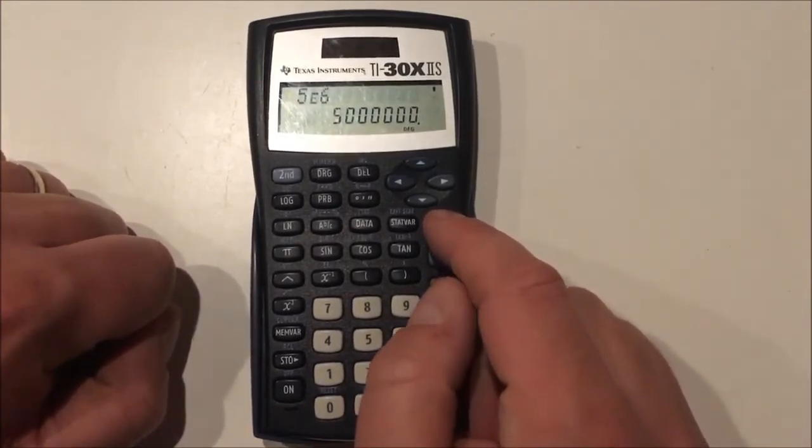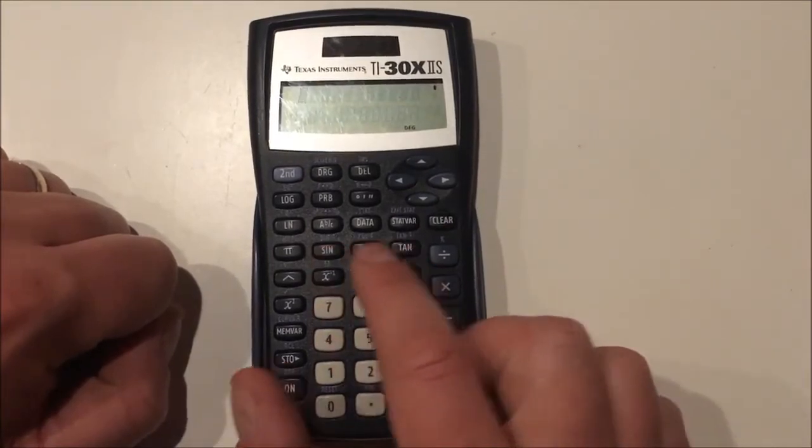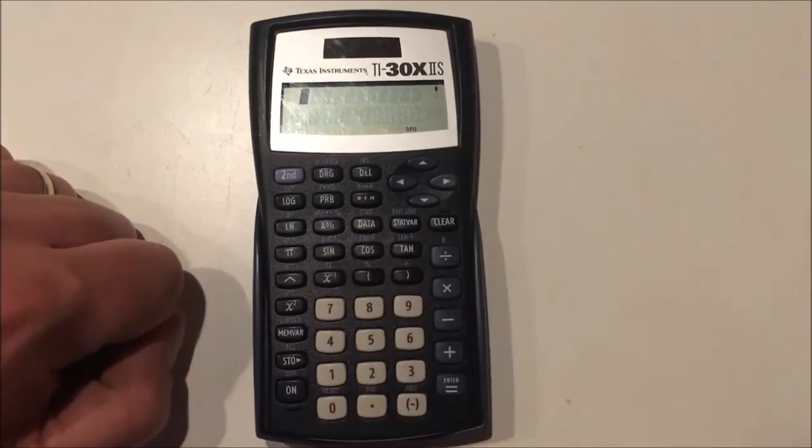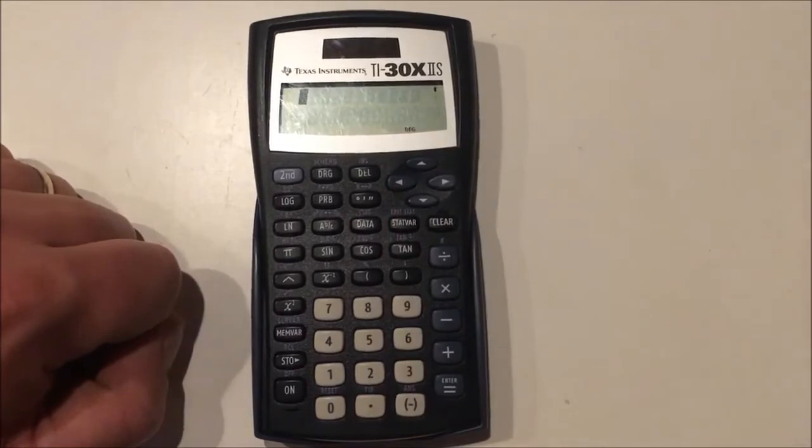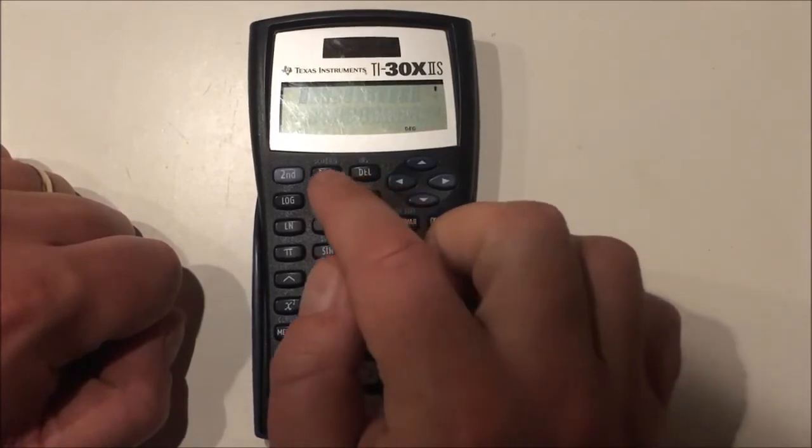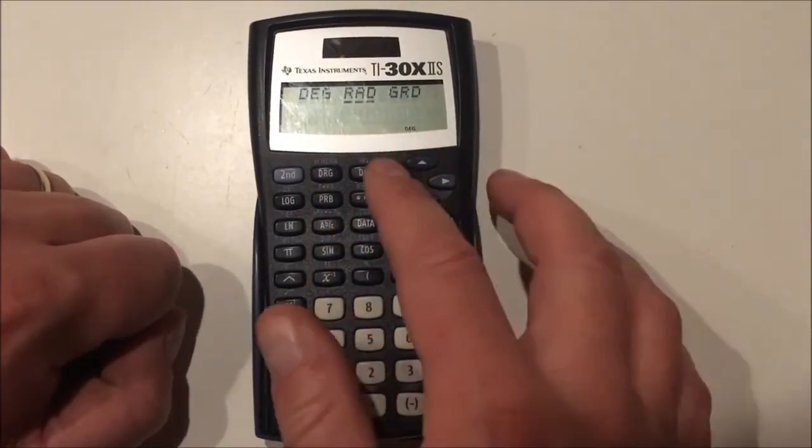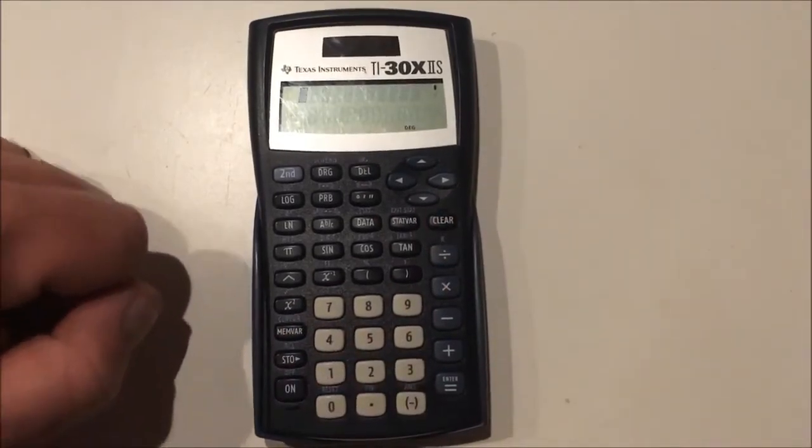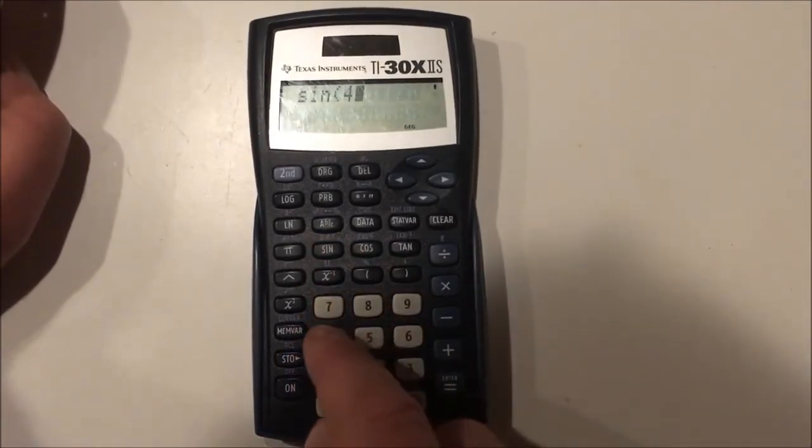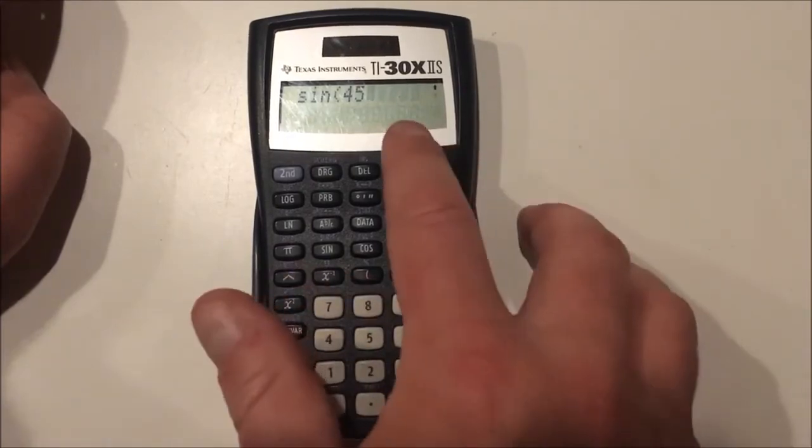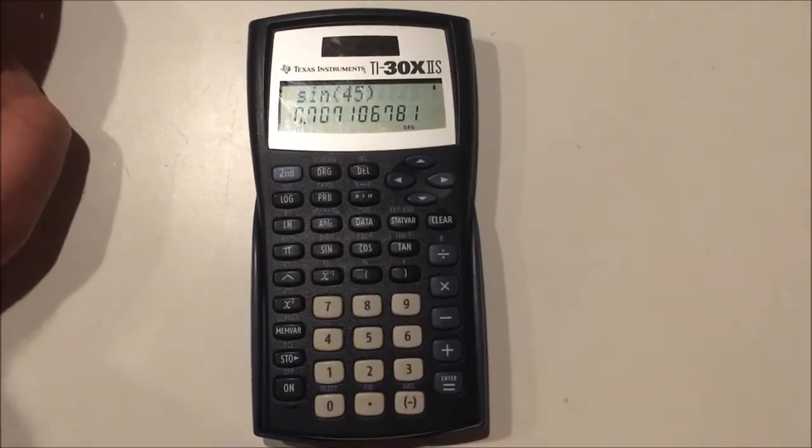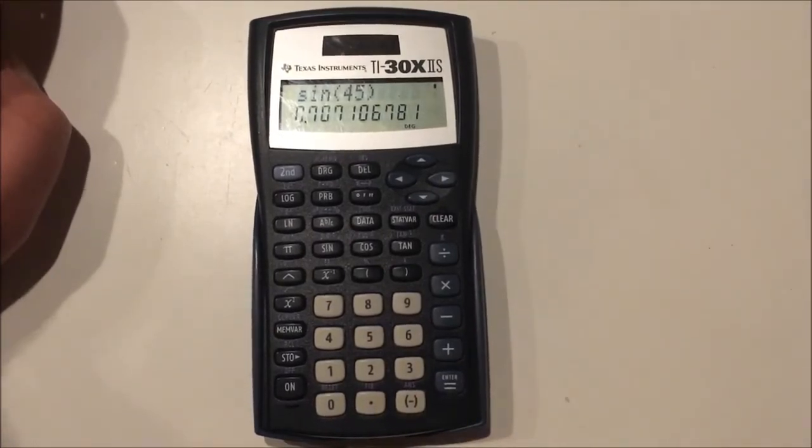Now let's check out some trigonometry functions on this calculator. As you can see it has sine, cosine, and tangent. And above those buttons you see inverse sine, inverse cosine, inverse tangent. Now this is where your angle type matters. I'm going to leave that in degree mode right now. So what I'm going to do is I'm going to evaluate the sine of 45 degrees. I don't have to put the degree symbol, it already knows I'm in degrees. I'll close the parenthesis for good measure. And I will get this crazy decimal. That's the sine of 45 degrees.